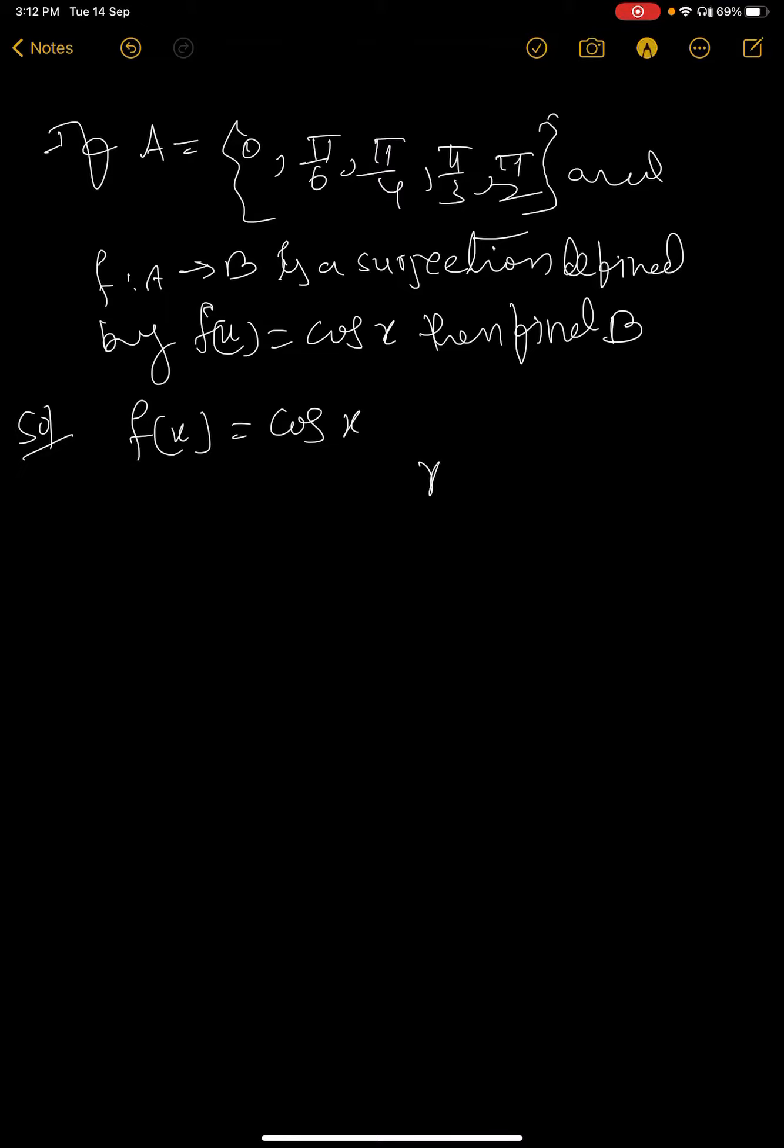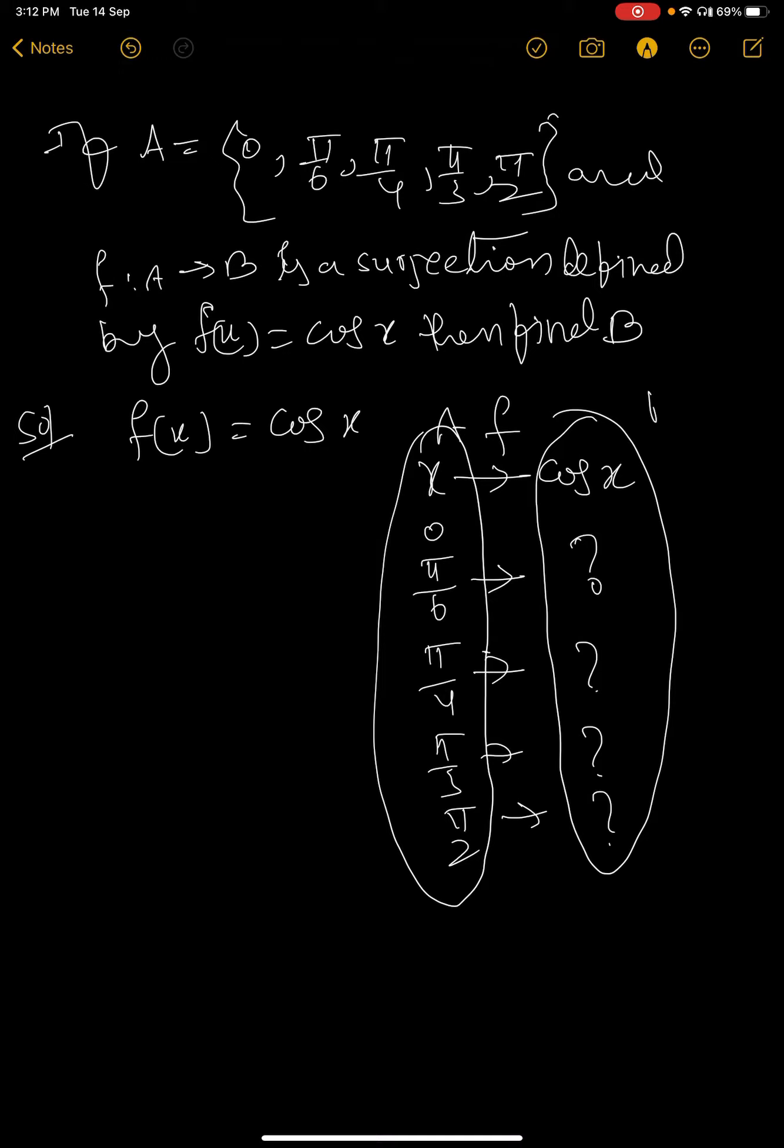So the meaning of this one is x is associated to cos x by the function f. Here A is the domain, that means these x values are 0, π/6, π/4, π/3, π/2. The associated value you have to find. This is A and this one is B. The question mark you have to find.